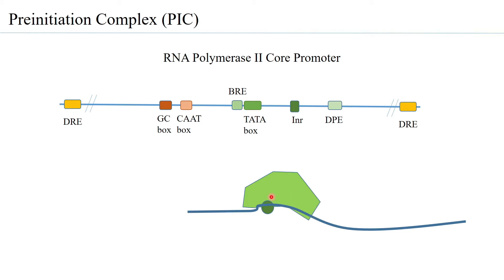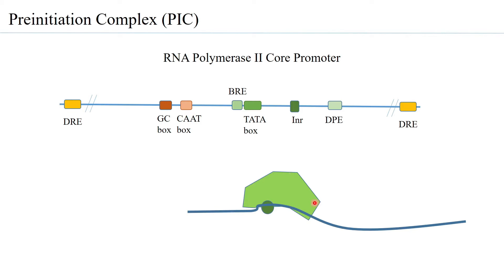These are called TAFs, and there can be as many as TAF1 to TAF13 or TAF14 present along with the TBP. Transcription factor 2D is therefore basically made up of the TBP and the TAFs.